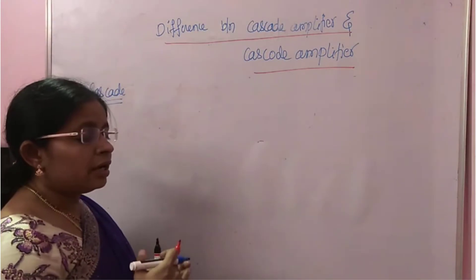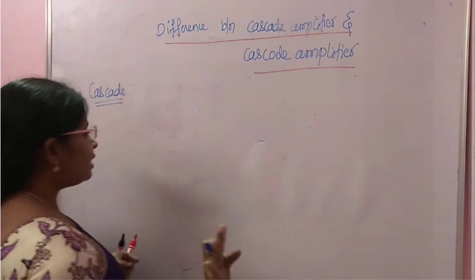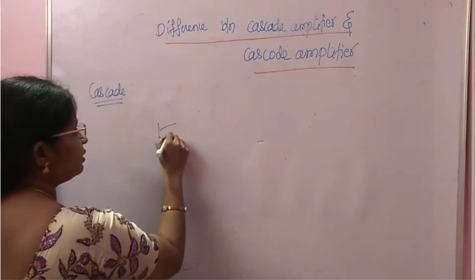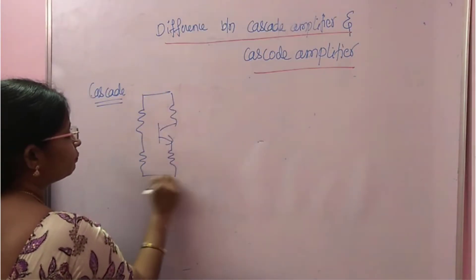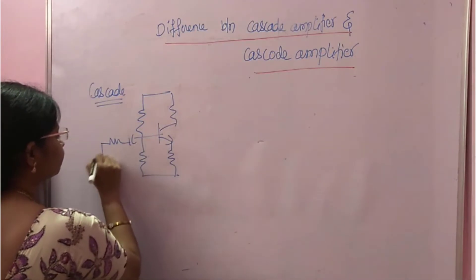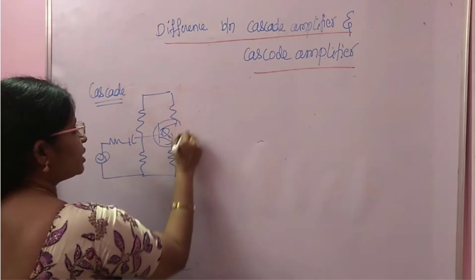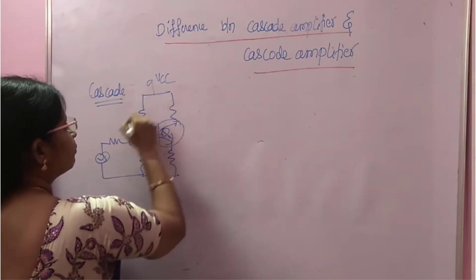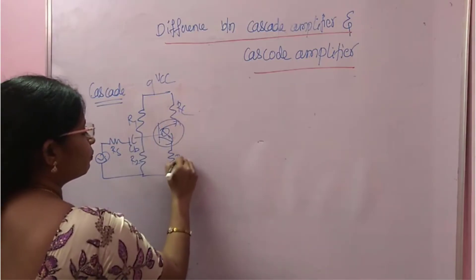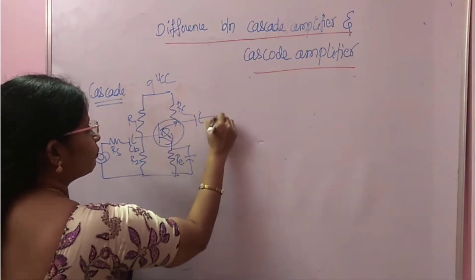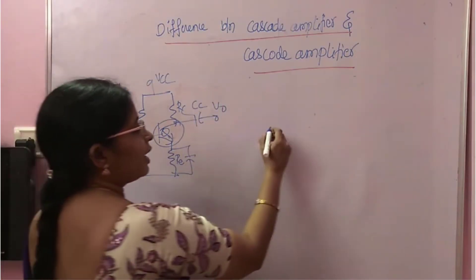Suppose the single stages are connected in series. Take a CE amplifier — one CE amplifier, a small CE amplifier. The first stage is connected. This is the first stage. Then take another CE.